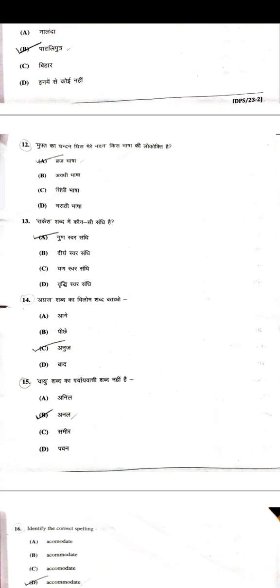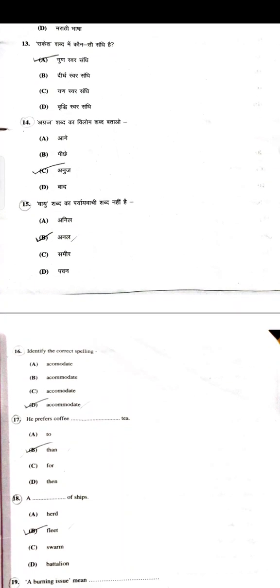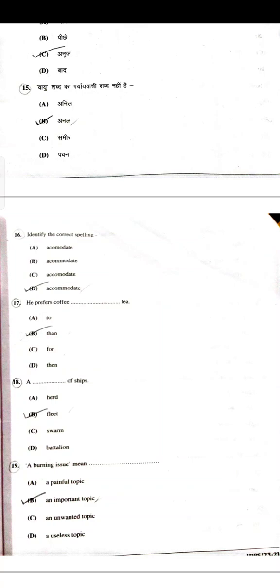'Muft ka chandan ghis meri nandan — kis bhasha ki lokokti hai' — Braj bhasha. 'Raakya shabd me kaun si sandhi hai' — Gunswar sandhi. 'Agra shabd ka vilom shabd' — Anuj. 'Vaayu shabd ka paryayvachi shabd nahin hai' — that is Annul.